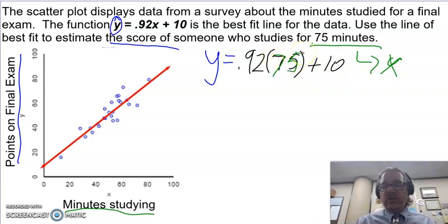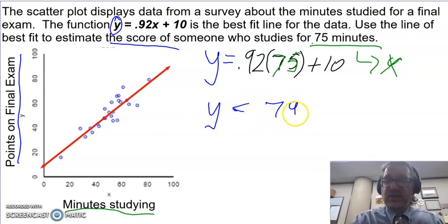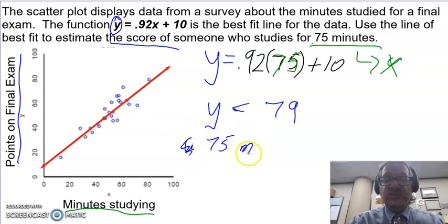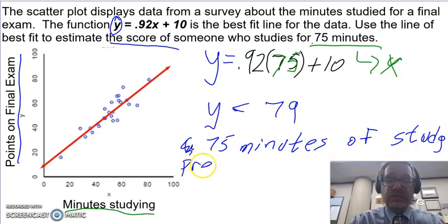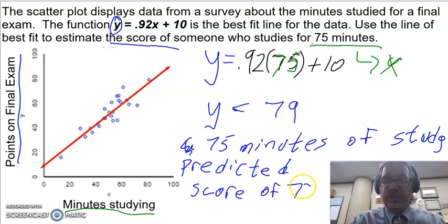So what does this work out to be? Well, we're going to take out our handy dandy calculator. Y equals. And I'm going to plug it in. 0.92 times 75 plus 10. That will give me a 79. So when we study for 75 minutes, our score is 79. Is predicted to be a 79. So 75 minutes of studying. We predict our score will be predicted. Gives a predicted score of 79. I'm not guaranteed to get a 79. But that's what my line is predicting.